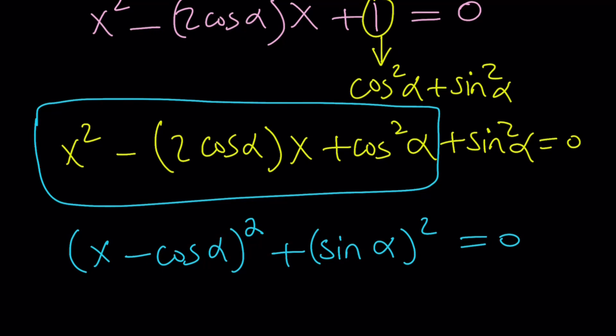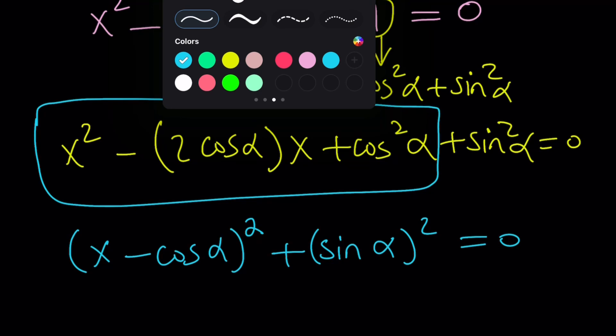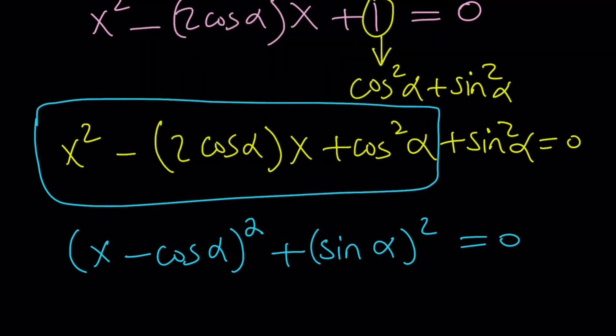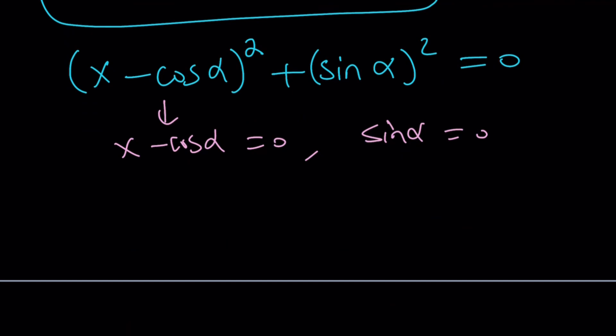If x and alpha and everything here is real numbers, then the sum of squares equals 0 only implies one thing. What is that? It means that everything in the sum is 0. So, this must be 0 and this must be 0. What does that mean? It means x is equal to cosine alpha and sine alpha is 0.